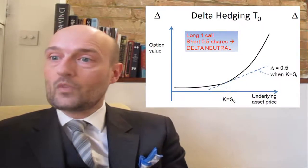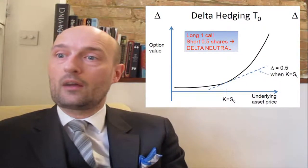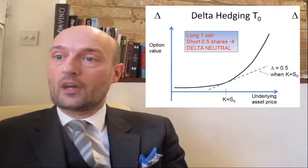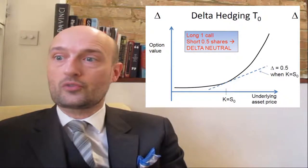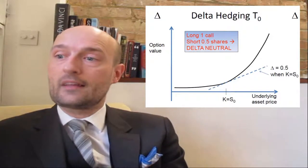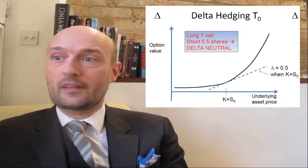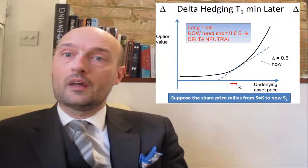Once we're Delta neutral, for small rises and falls in the price of the underlying we wouldn't expect to have any really large gains or losses on our portfolio — we're hedged. The graphic on screen right now is showing you long a call option, short 0.5 shares times the number of shares covered by that call option, so short 50 shares, which gets us Delta neutral. This is an at-the-money call, so the strike and the spot are at the same level.